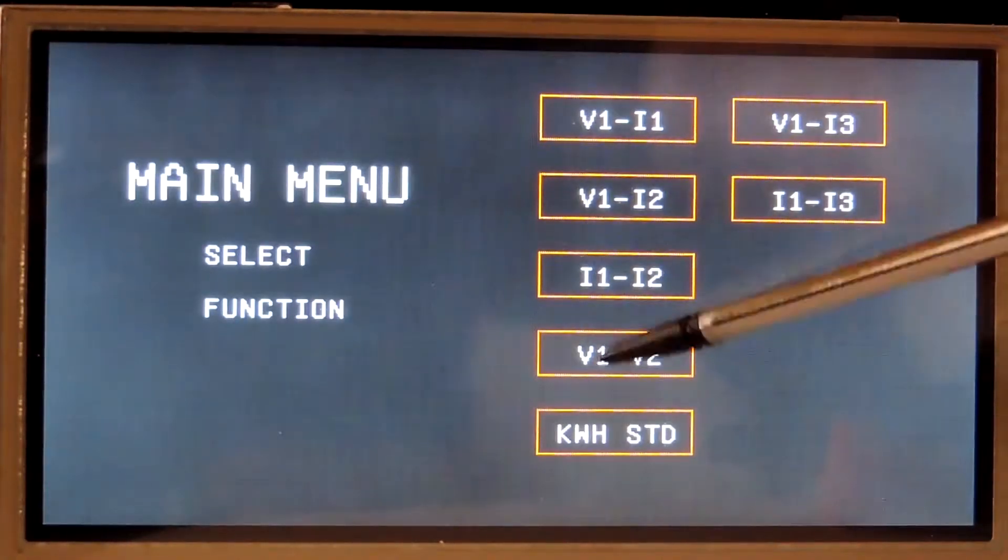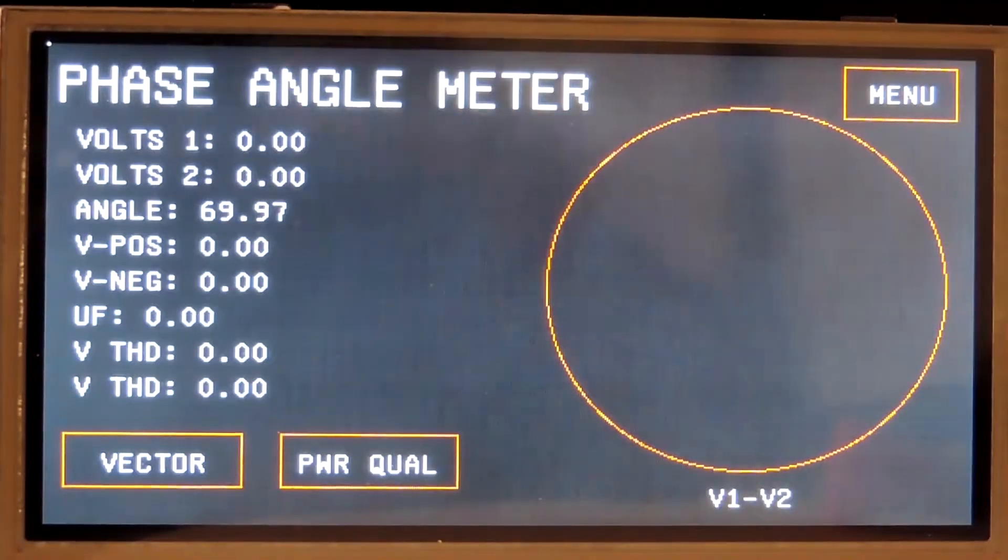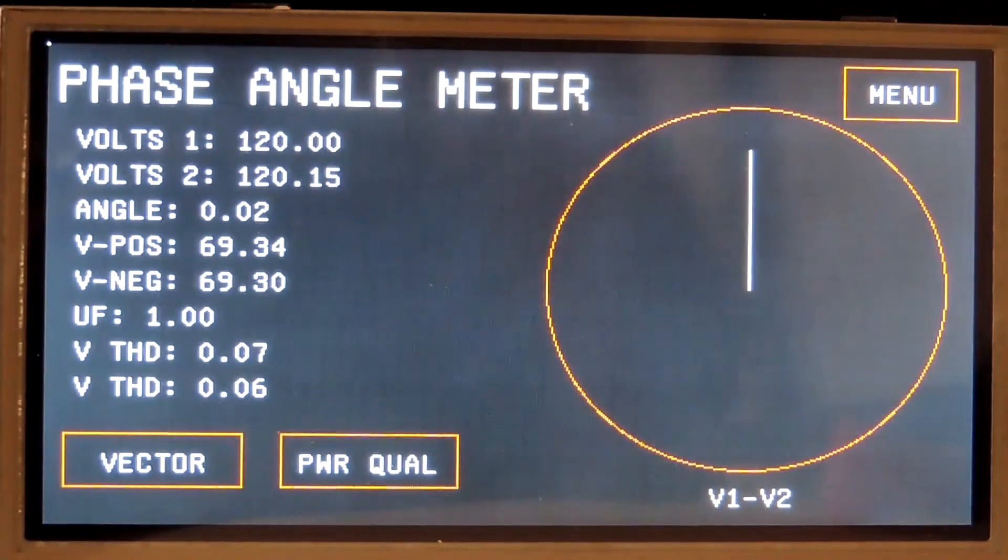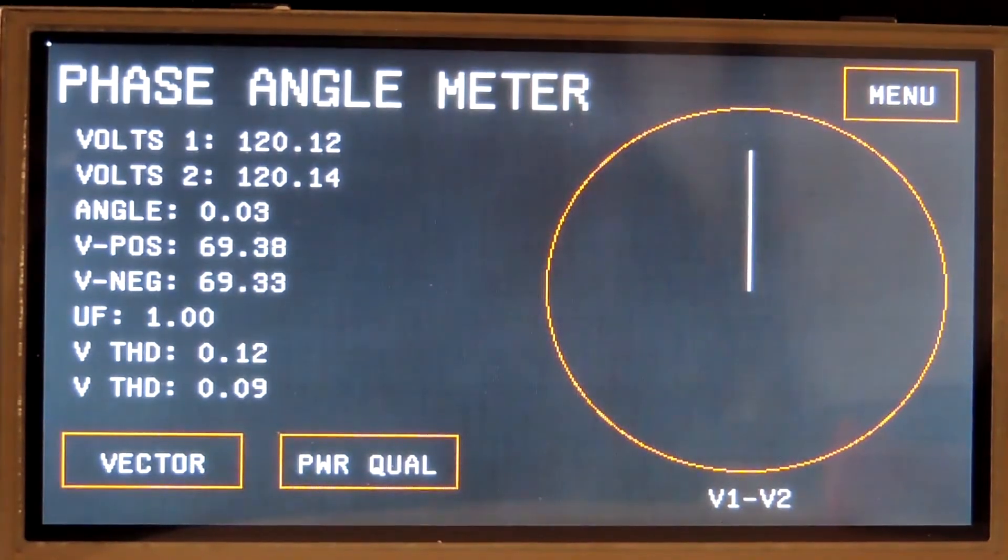In the V1V2 mode, turn the voltage on here. It gives you the two applied voltages to the voltage input. It gives you the angle between them. In this case, they're the same voltage. You see the angle is 0.02. But unique to phase angle meters, it gives you, if this is connected to a three-phase system...